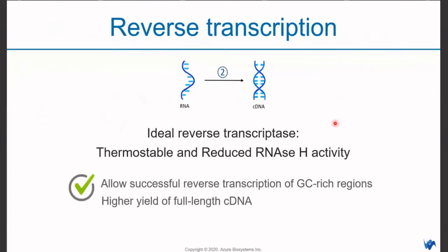Next, we will reverse transcribe the pure and intact RNA to cDNA, which is the nucleic acid template for QPCR. The choice of reverse transcriptase enzyme is also important — ideally, it should be thermostable with reduced RNase H activity. Thermostable reverse transcriptase enzyme allows successful reverse transcription of GC-rich regions. The RNase H domain in the reverse transcriptase enzyme can drastically reduce the yield of full-length cDNA, which translates to poor sensitivity. Some reverse transcriptase enzymes such as SuperScript 2 and 3 have been engineered for reduced RNase H activity, and therefore yield higher full-length cDNA.